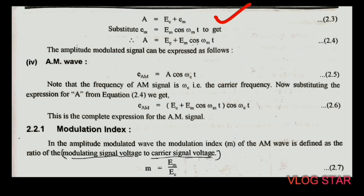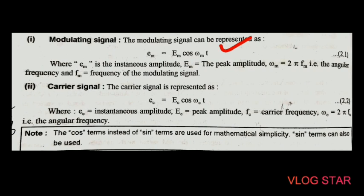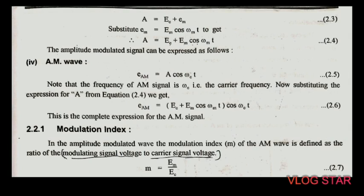The envelope A = E_c + e_m, where e_m carries the modulating signal. We know the value of e_m is E_m cos(ω_m t), so we add this to E_c. Thus the instantaneous value of the envelope is A = E_c + E_m cos(ω_m t). After that we express the envelope in terms of the AM wave.